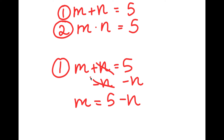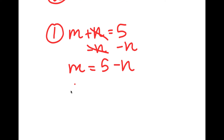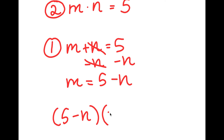The reason I did this is because I can substitute this value of m back into my original equation. So, if I substitute this back in, I get 5 minus n times n is equal to 5.